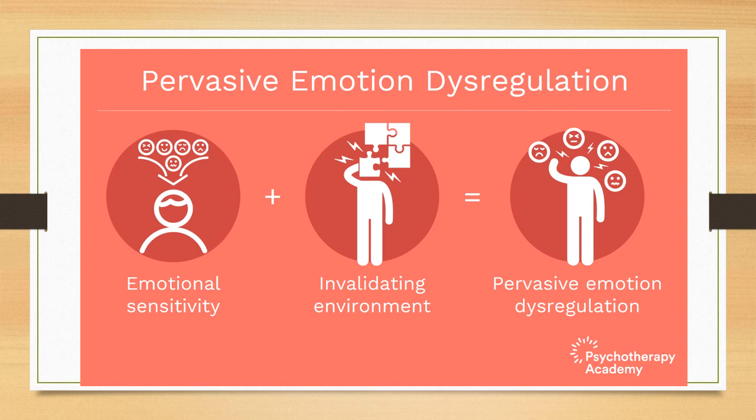This is the idea behind the biosocial theory: some people are born with emotional sensitivity in their genes, and when they come into an invalidating environment, they experience pervasive emotional dysregulation. That concludes Chapter 1. I hope you find these videos informative. Thank you for your time, and please like and subscribe to see more chapters — I'll be uploading following chapters very soon to train you on DBT.